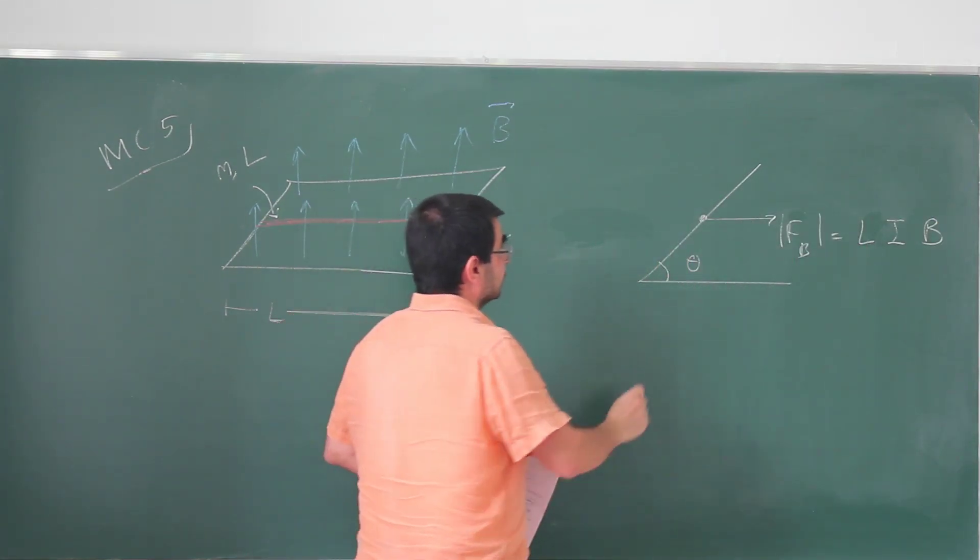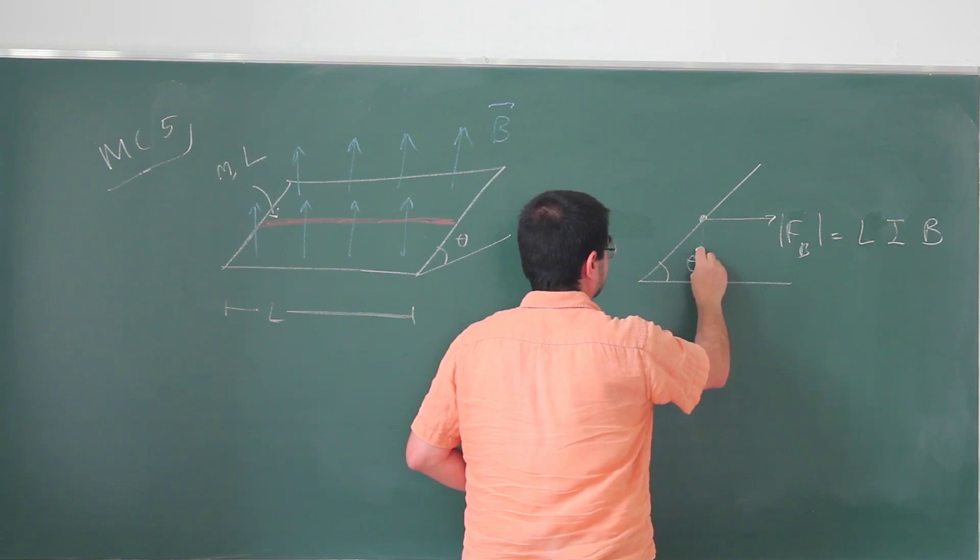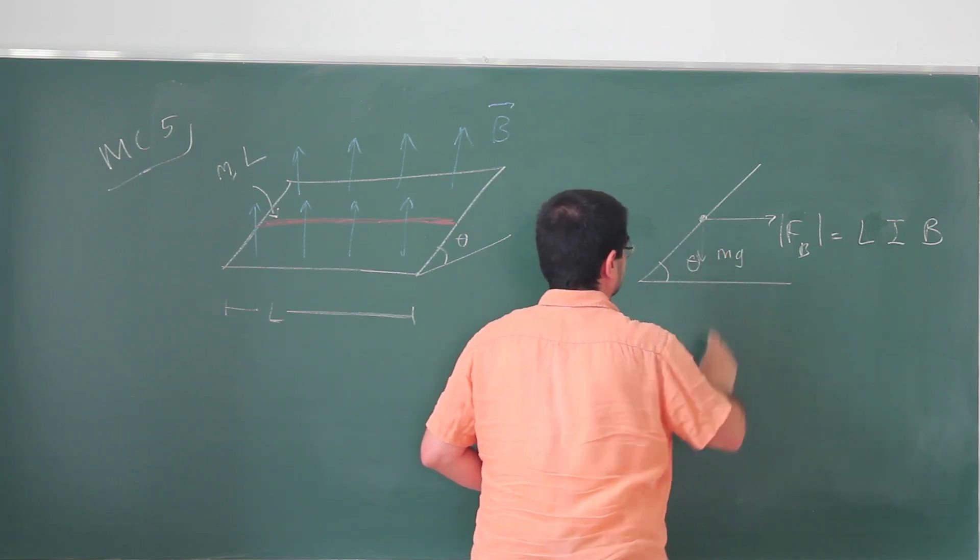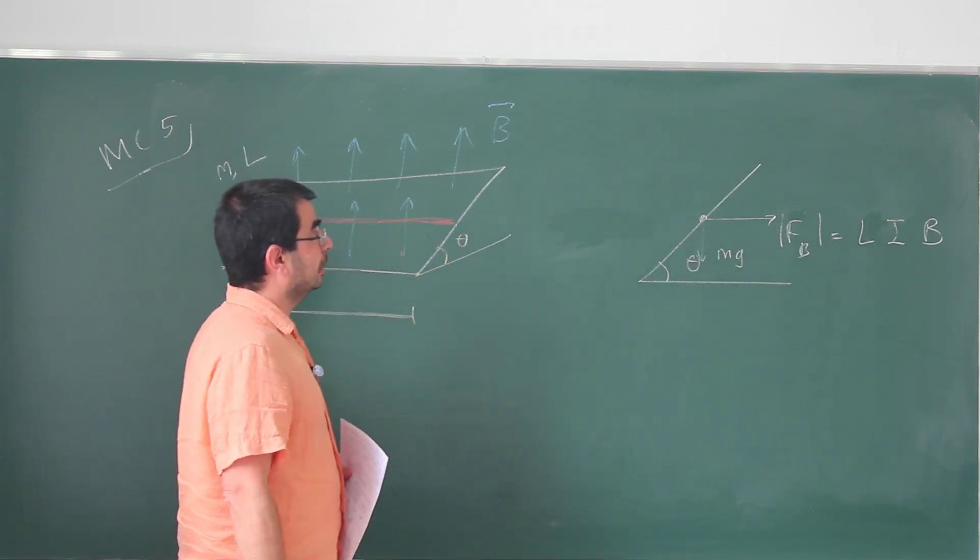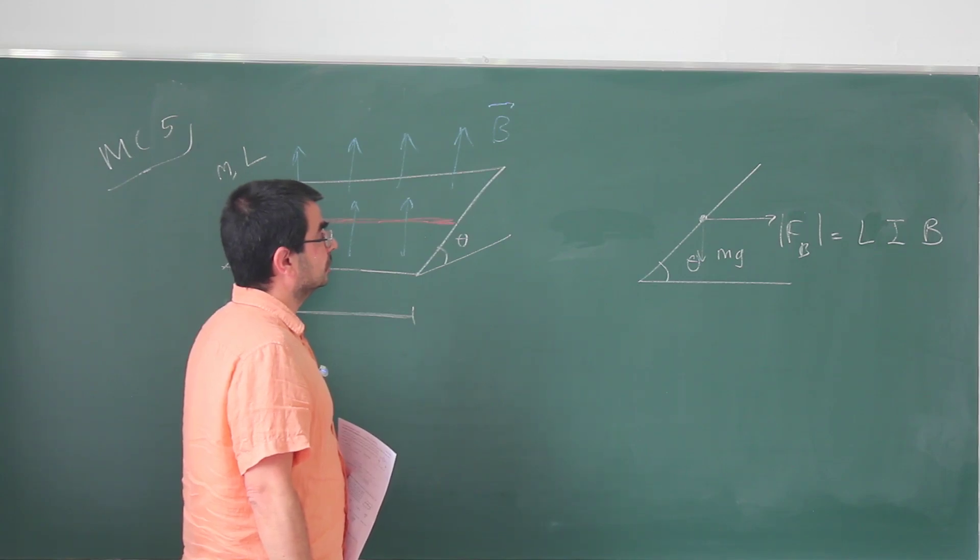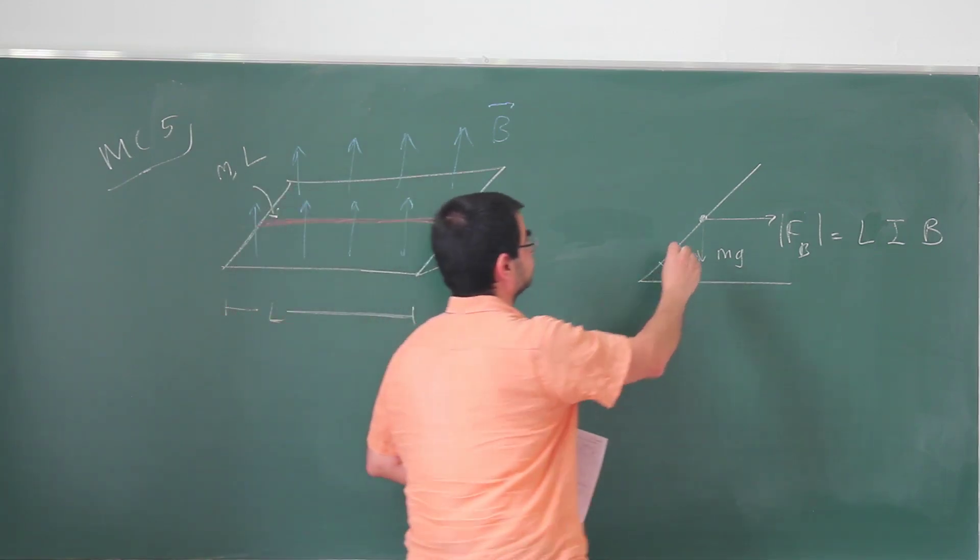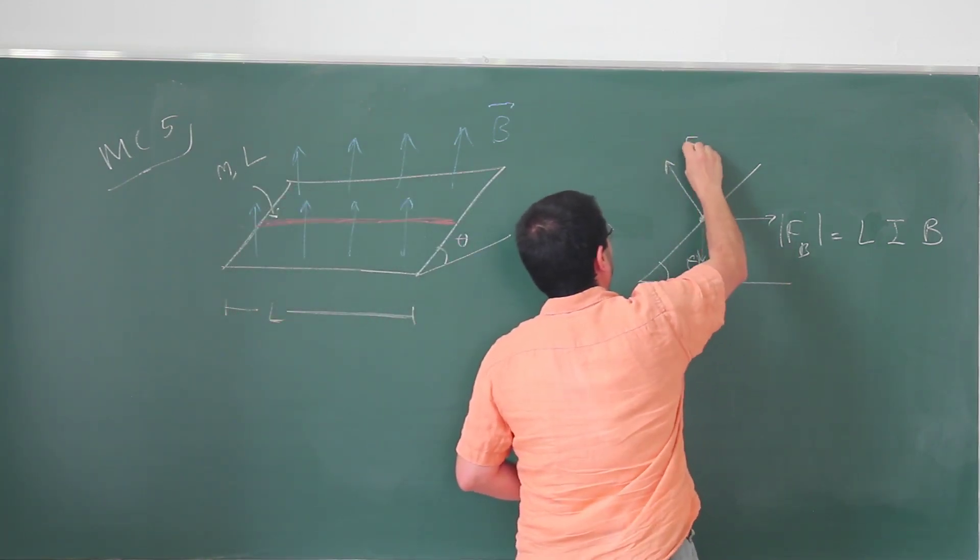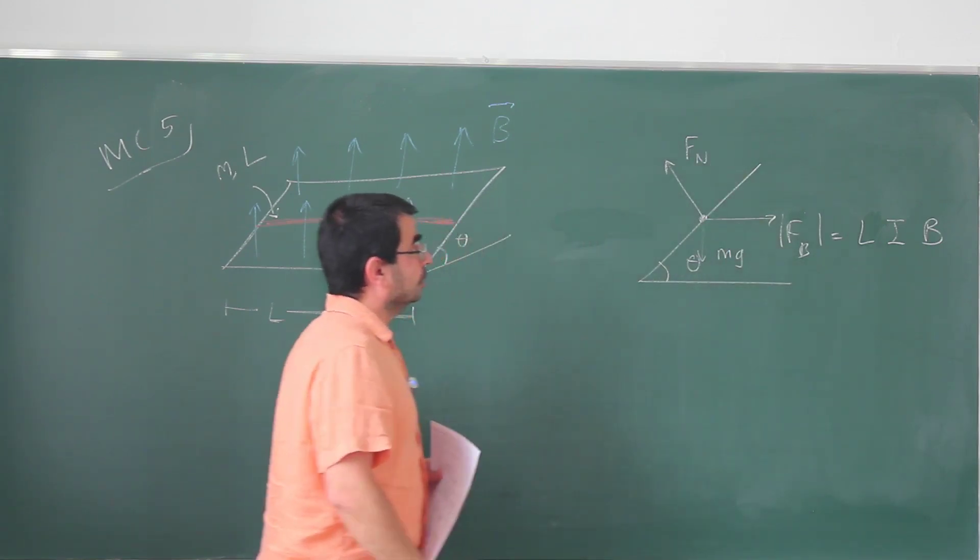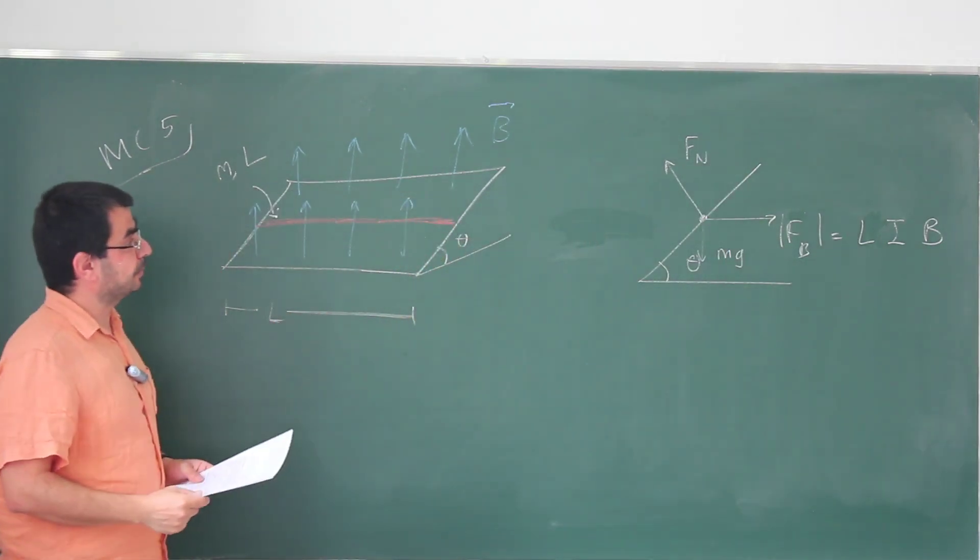The gravitational force is, of course, this way. That's just Mg. And somehow, these guys, along with the normal force, if normal, are going to prevent this wire from slipping down the incline.